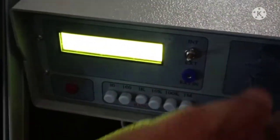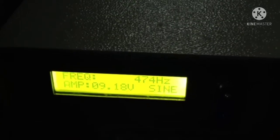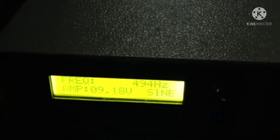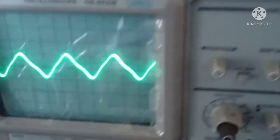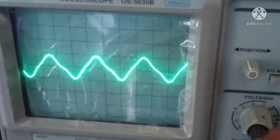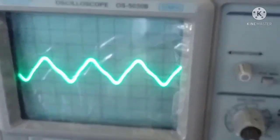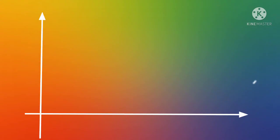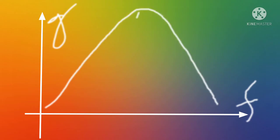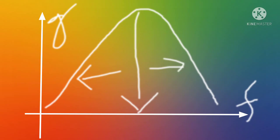Setting a frequency less than the resonant frequency — approximately 500 Hz — the output voltage measured across the resistor is again reduced. In this way, for both series and parallel resonant circuits, by studying the variation of gain with respect to frequency, we can determine the bandwidth, the resonant frequency, and the quality factor.